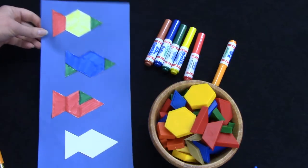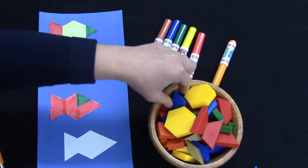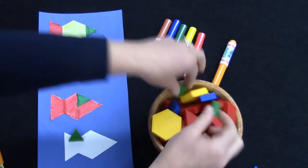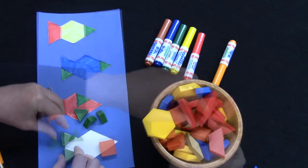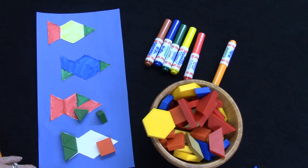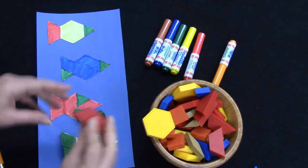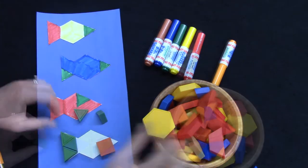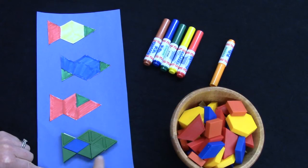What if I did this one as green, as green as I can? The tail can be made out of three triangles. That's the same shape as a trapezoid.